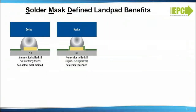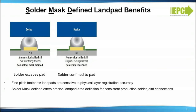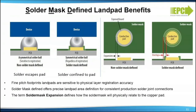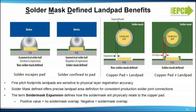Solder mass defined land pad benefits: fine pitch footprint land pads are sensitive to physical layer registration accuracy. Solder mass defined offers precise land pad area definition for consistent production solder joint connection. A non-solder-mass-defined land pad will allow the limited solder paste to escape the land pad site, creating an undersized solder joint. The term solder mask expansion defines how the solder mask will physically relate to the copper pad — a positive value is a non-solder-mask overlap, and a negative value is a solder mask overlap.